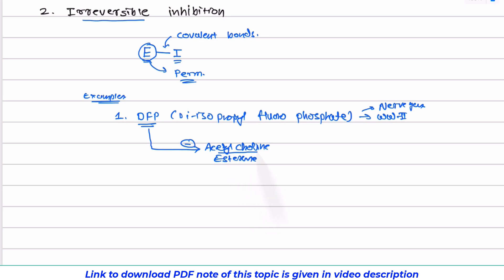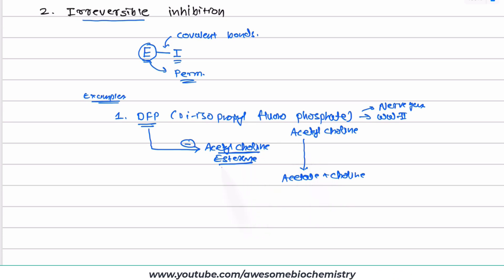Normally, acetylcholinesterase breaks down the neurotransmitter acetylcholine into acetate and choline at the synapse. This breakdown happens within a microsecond of acetylcholine being secreted. But since DFP is an irreversible inhibitor of acetylcholinesterase, acetylcholine will permanently stay at the synapse and continuously stimulate the next neuron. This is dangerous — ultimately the person undergoes paralysis and death. So DFP is a highly toxic compound.